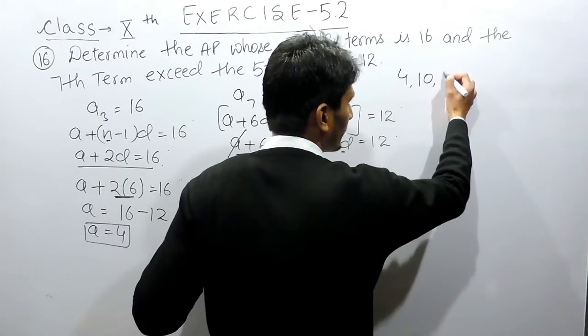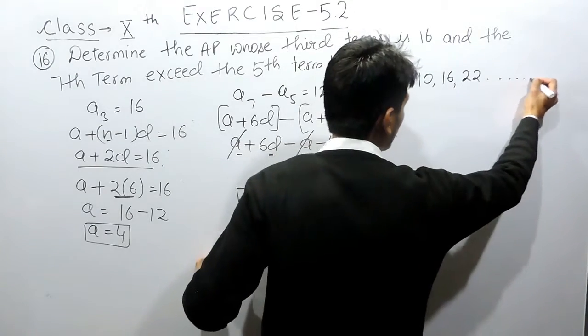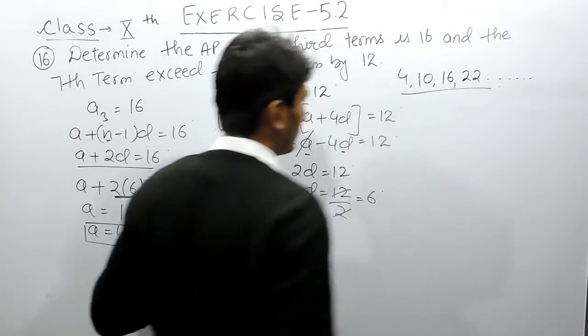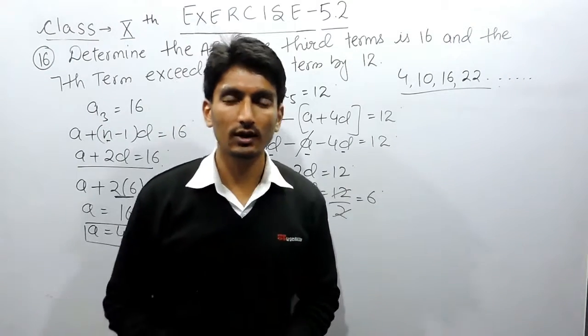Again you have to add another 6, another 6, and so on. So this is the AP required in this question. This is how you can solve this question.